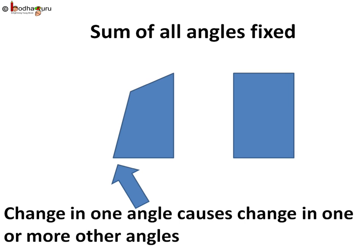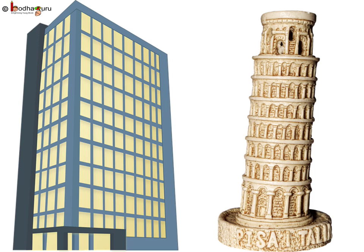We see angles everywhere. Buildings make right angle with ground as those are standing straight. Leaning tower of Pisa is making acute angle with ground as it is leaning towards ground.